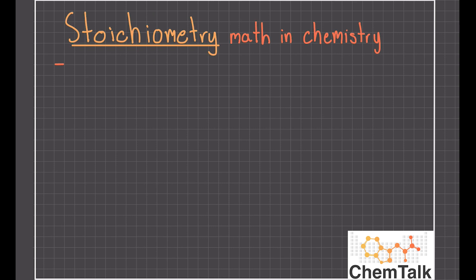Stoichiometry is the use of math in chemistry. Using stoichiometry we are able to convert between many different units including moles, atoms, grams, and liters.